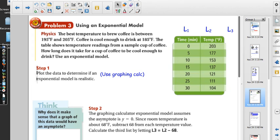The table shows temperature readings from a sample cup of coffee. After zero minutes, five minutes, ten - at least they only had to go a half hour. How long does it take a cup of coffee to be cool enough to drink and use an exponential model? We've done this before, we've just not done it with exponential models. We've put stuff into the calculator before and we're going to do that again.